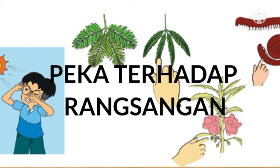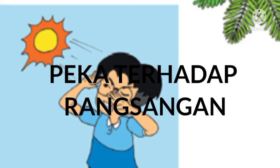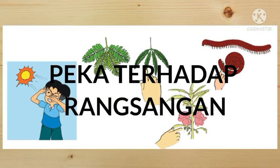Ciri yang ketiga adalah peka terhadap rangsang atau irritabilitas. Irritabilitas adalah bagaimana makhluk hidup tersebut ketika terjadi perubahan di lingkungannya, maka makhluk hidup tersebut akan langsung peka. Hal ini karena adanya reaksi yang timbul dari rangsangan lingkungan. Rangsangan itu bisa berupa cahaya, panas, bau, sentuhan, ataupun rasa.